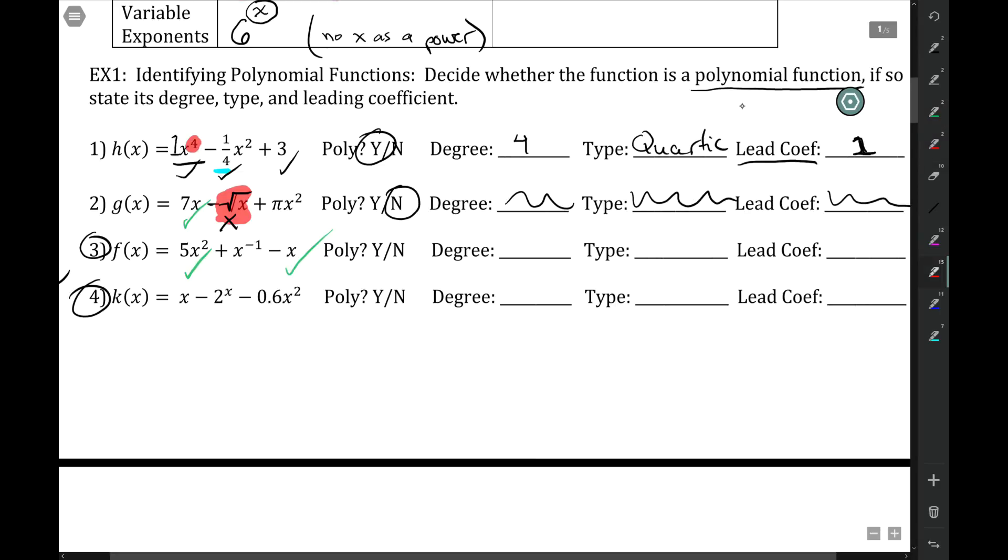But here I have this negative exponent, so it is not a polynomial. So there is no type. There is no leading coefficient. If anything, you could say no because of the negative exponent.